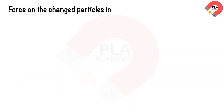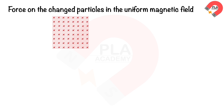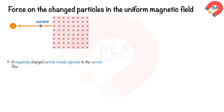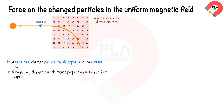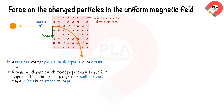Force on moving charged particles in a magnetic field. When a negatively charged particle travels opposite to the current flow, it interacts perpendicularly with a uniform magnetic field directed into the page. This interaction creates a magnetic force being exerted on the particle, directed downward and perpendicular to its motion.